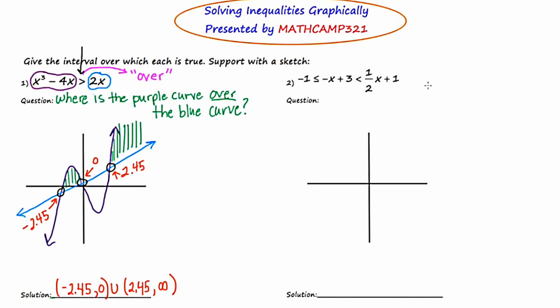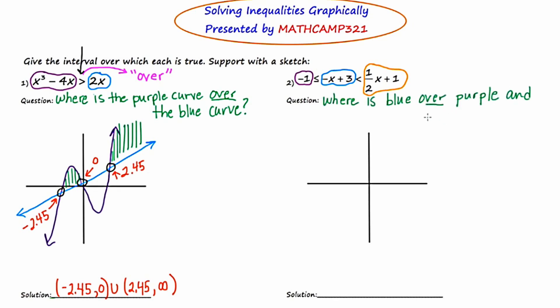Let's try a second example. This is a compound inequality and it has three regions: the left region, the middle region, and the right region. For this reason, we're going to need three colors — purple on the left, blue for the middle, and orange as the third color. The question is going to be a little more complicated because there are three parts: where is the blue curve over the purple curve but at the same time under the orange curve? So both of these conditions have to be met at the same time.